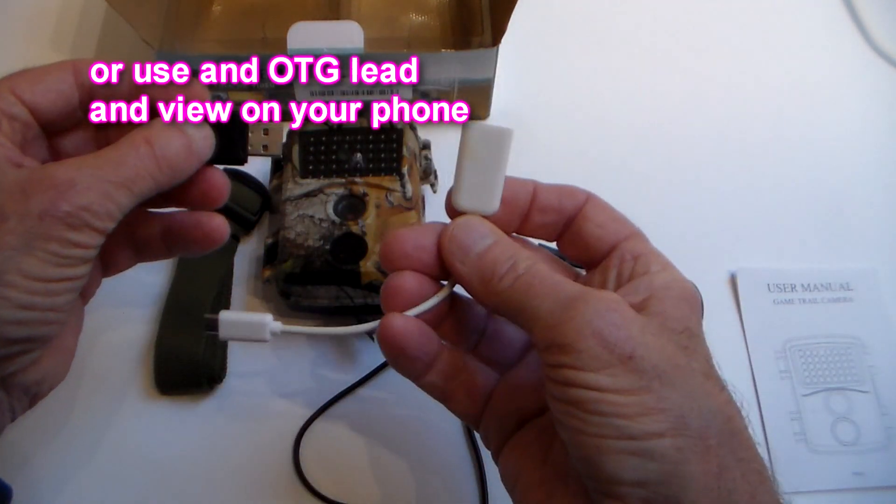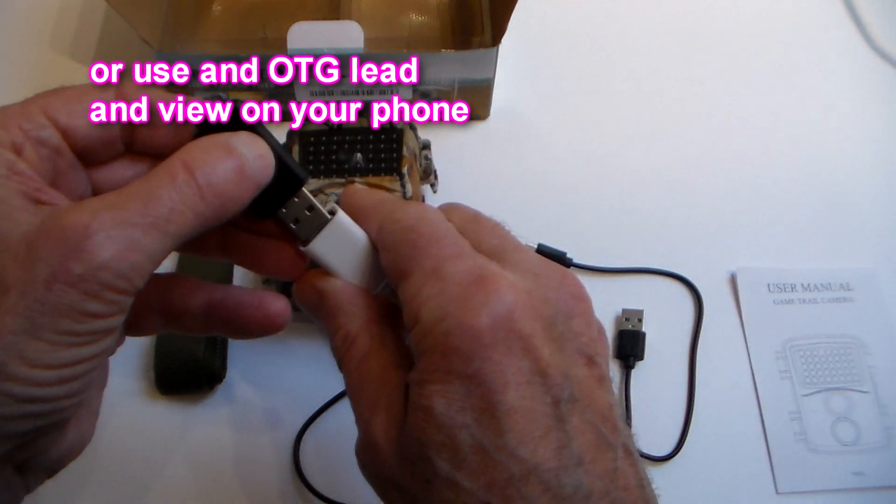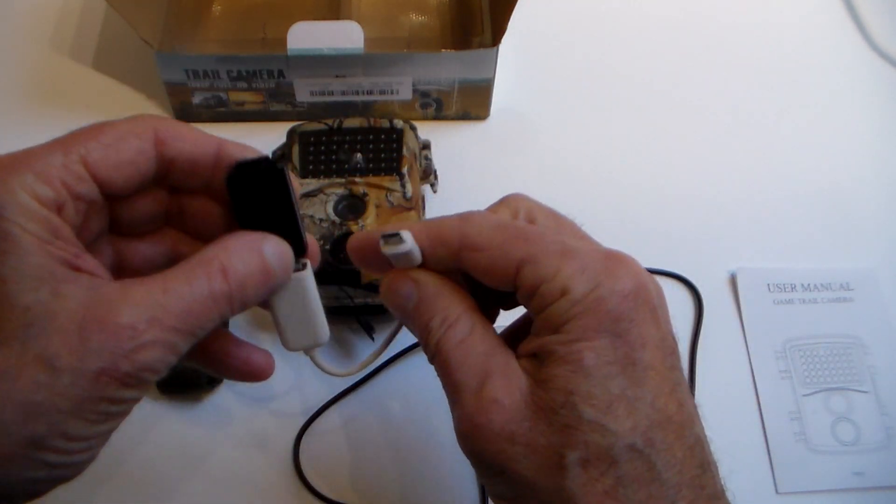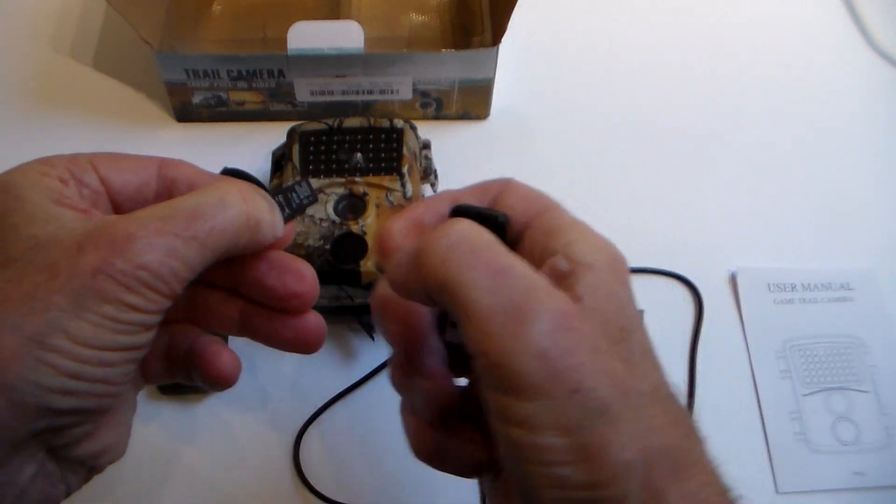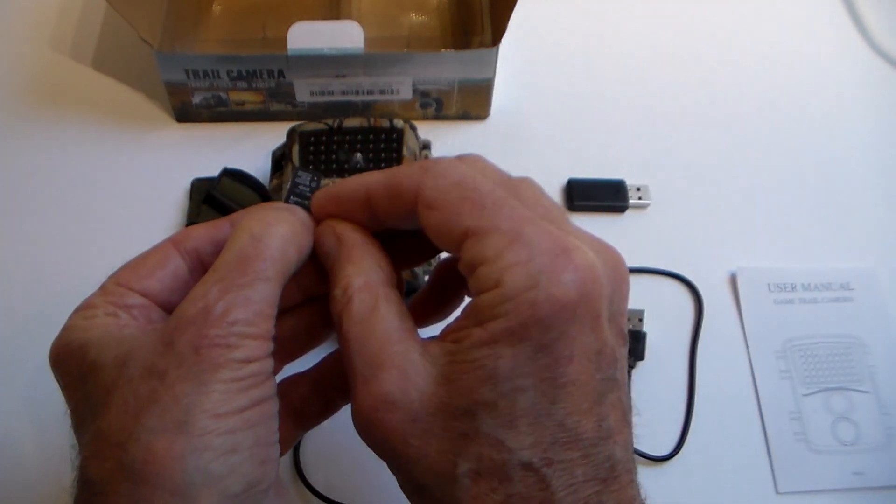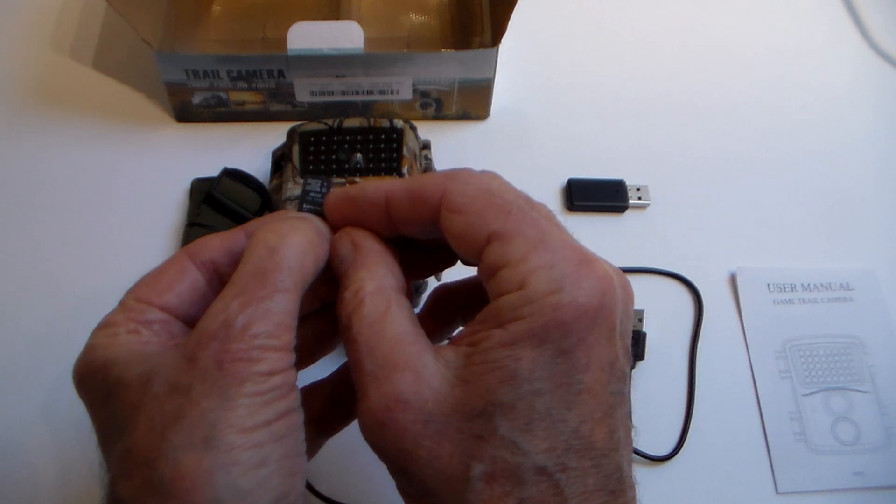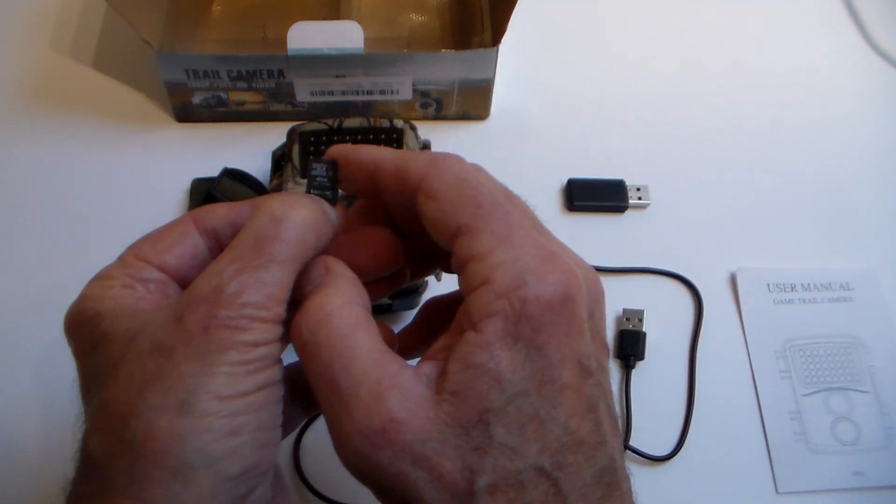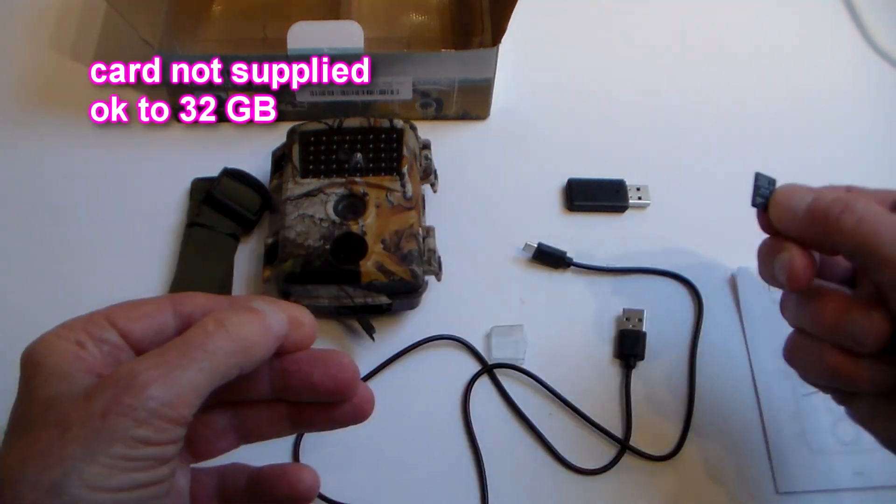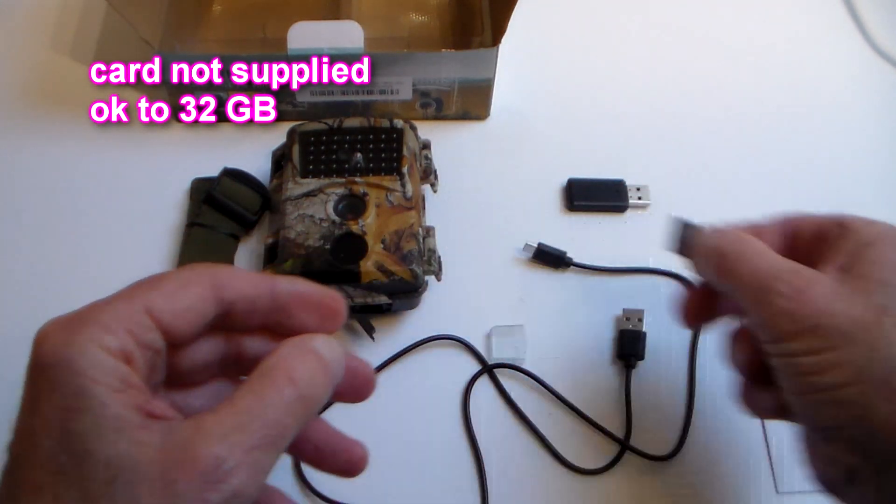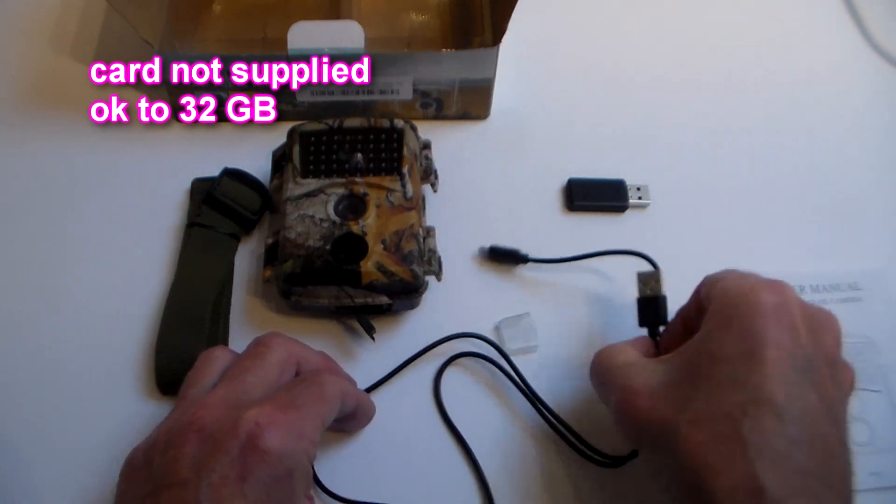Alternatively you could buy an OTG cable, plug this reader into that and plug into your phone and look at the files. Doesn't come with a card. I've been using an old class 1, 4 gig micro card that I had kicking around, worked fine with that. And I did actually have some success with a 64, but you're safe with the 32.